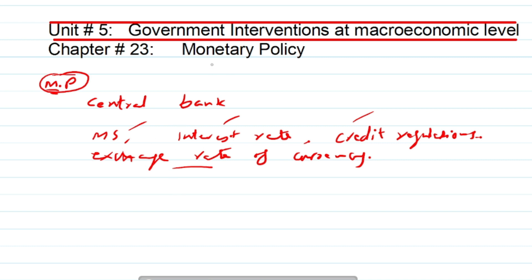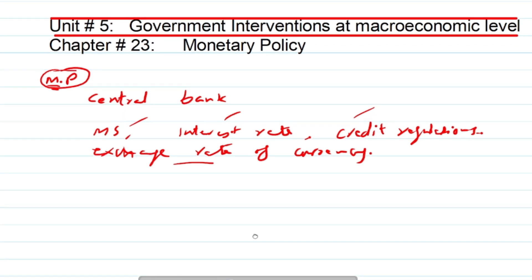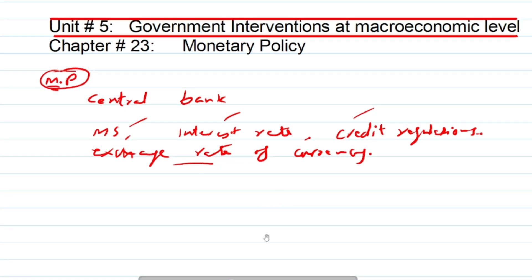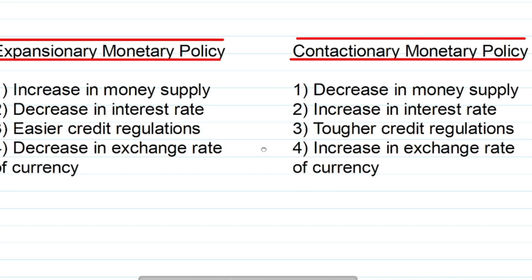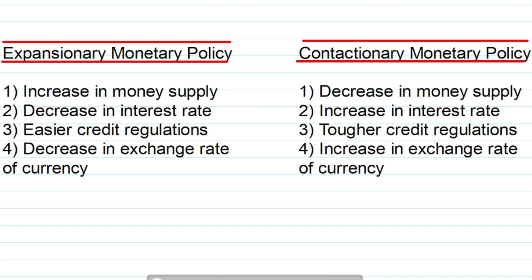How does monetary policy affect aggregate demand and achieve multiple macroeconomic objectives? We split monetary policy into two types: expansionary monetary policy and contractionary monetary policy. Expansionary monetary policy, as the name suggests, is the policy used to expand economic activity in the country. This policy is also known as inflationary policy because it causes demand-pull inflation in the country.